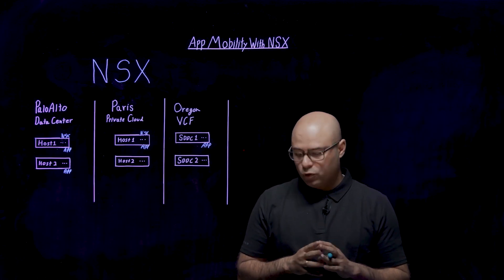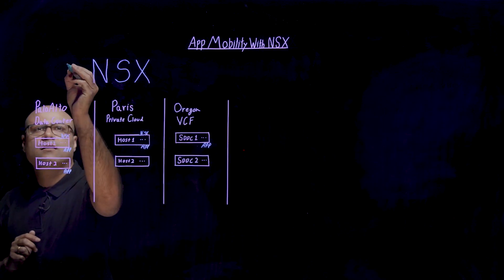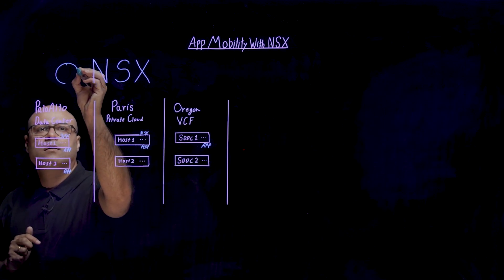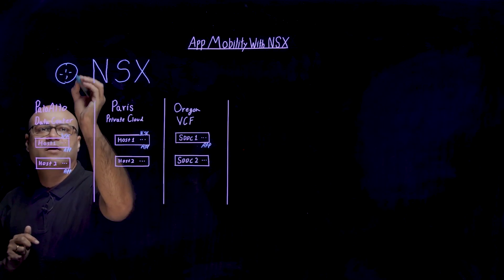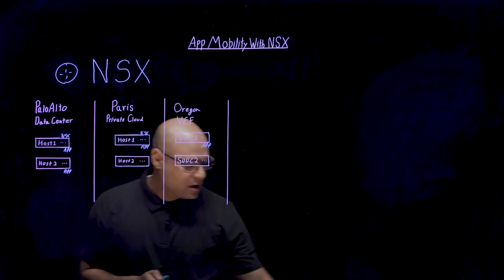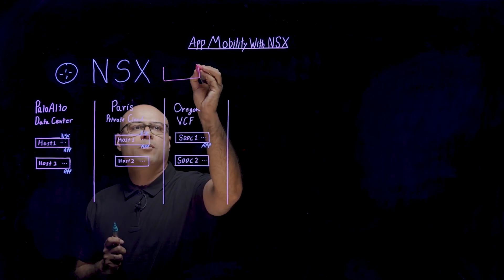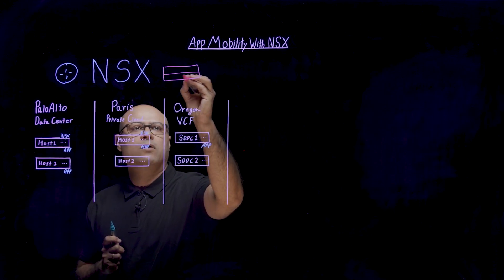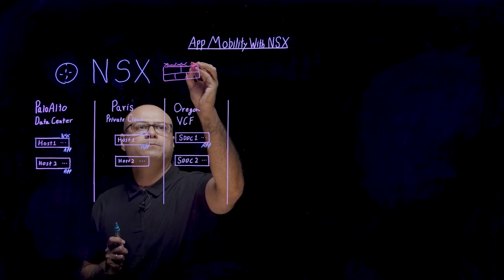Both NSX components — networking, represented here by the router, and security, represented here with the distributed firewall — are independent of each other.